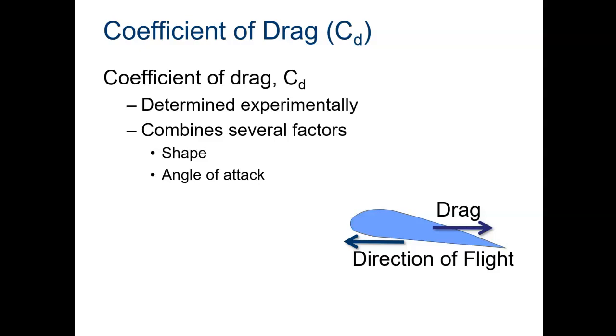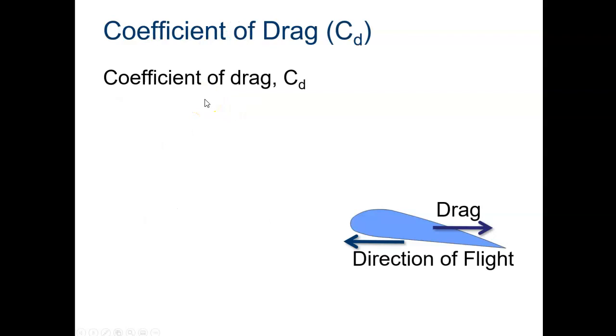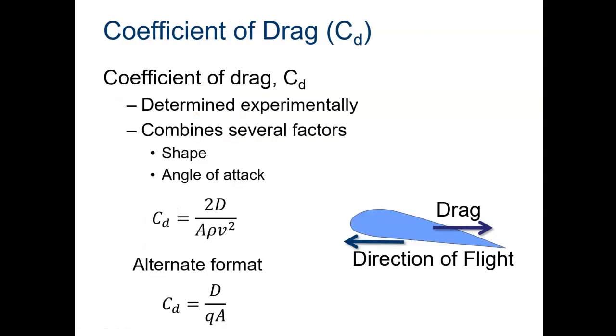And then CD or C sub D is the drag coefficient or coefficient of drag. And just like the lift coefficient, it's something that we figure out from a wind tunnel. It has to do with the velocity, the density, and then it also has to do with some geometry, the shape of the wing, the angle of attack and so on. So just like the coefficient of lift is found experimentally, so is the coefficient of drag.